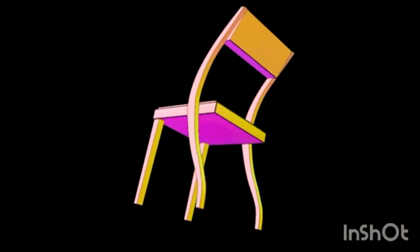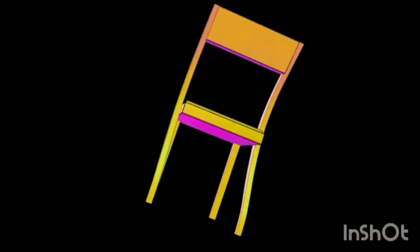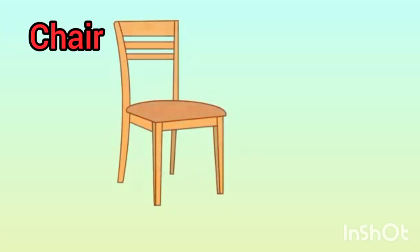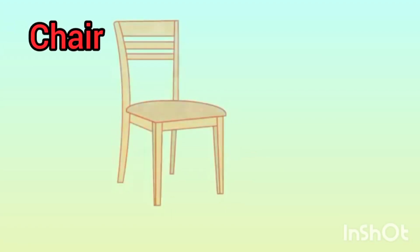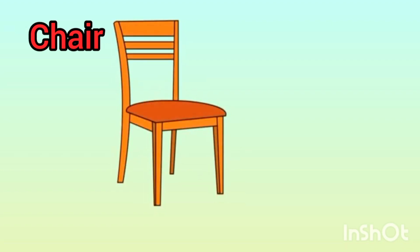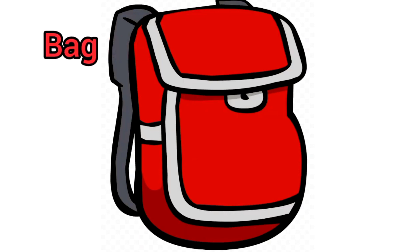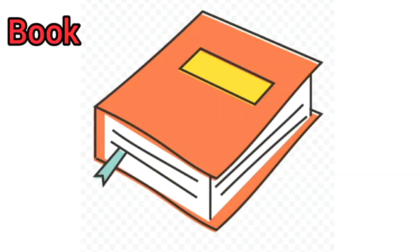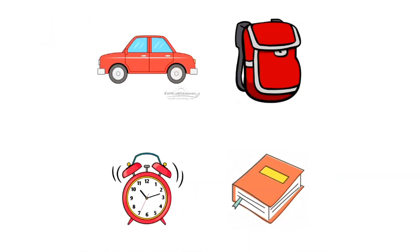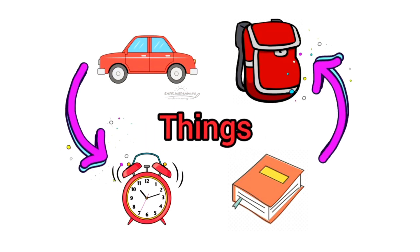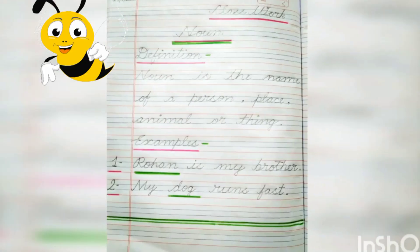Children, what are you sitting on? You are sitting on a chair. Chair is a naming word for a thing, so a noun can be a name given to a thing. What other things do you see around you? Car, bag, clock, book are names of things and are nouns too.